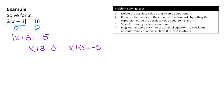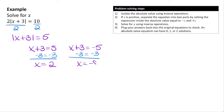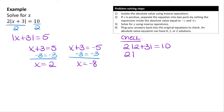Solving the first equation, I subtract 3 from both sides: x = 5 minus 3 = 2. For the second equation, subtracting 3 gives x = negative 5 minus 3 = negative 8. Checking x = 2: 2|2 + 3| = 2|5| = 2 times 5 = 10. True.